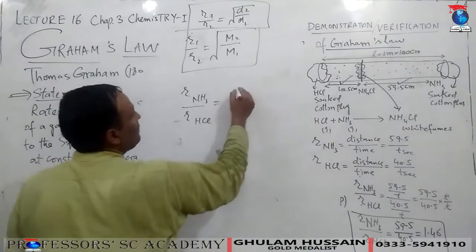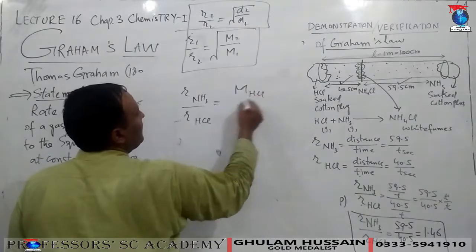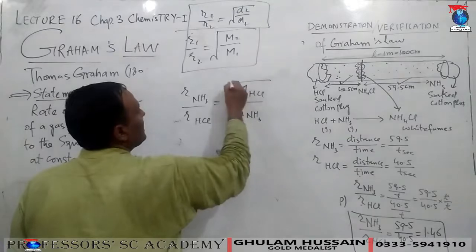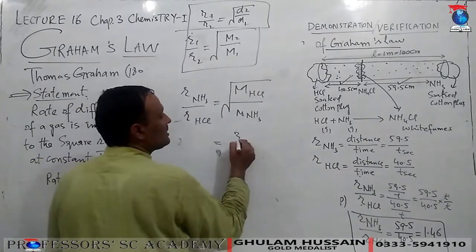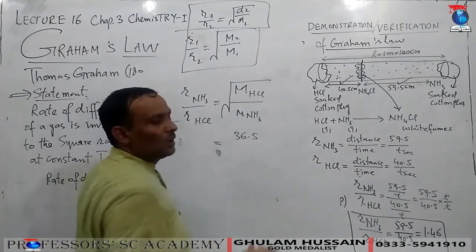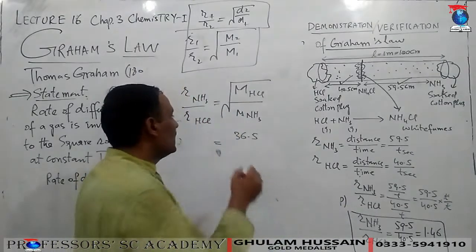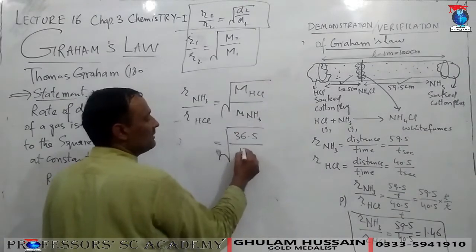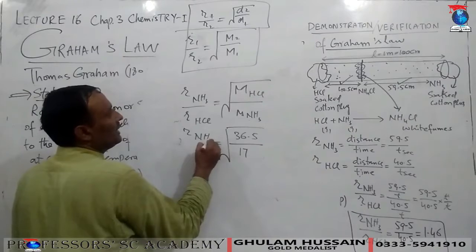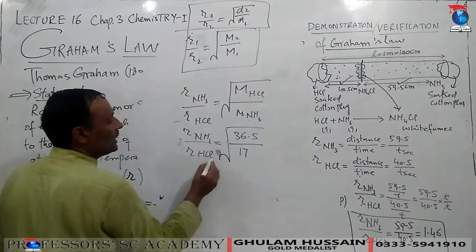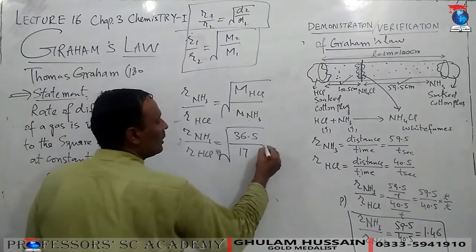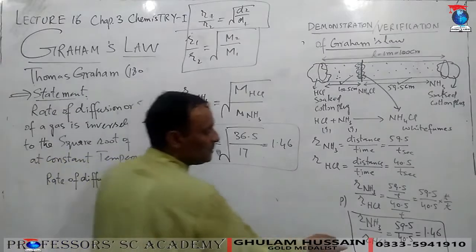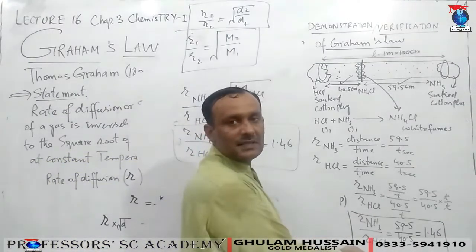Now applying Graham's Law of Diffusion, this ratio should equal √(M_HCl / M_NH3). The molecular mass of HCl: chlorine is 35.5 and hydrogen is 1, so M_HCl = 36.5. The molecular mass of ammonia: nitrogen is 14 and hydrogen ×3 is 3, so M_NH3 = 17. Therefore √(36.5/17) = 1.46. Graham's Law gives 1.46 and the experimental result is also 1.46 — both match perfectly.